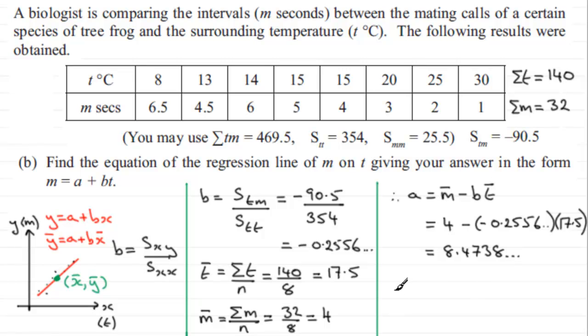Now, if I substitute these values for a and b into our equation here, we have m equals a. I'm going to give these to three significant figures. So this is going to be 8.47, and then we've got minus 0.256 times t. I'll note three significant figures to the side there, as I've given these two values, a and b, to that degree of accuracy. So there we go. There's our equation of the regression line of m on t.